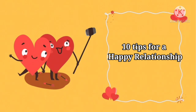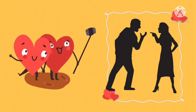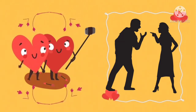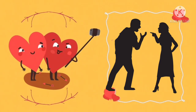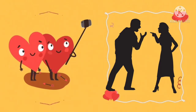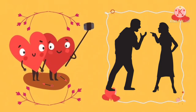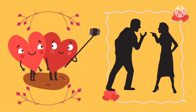Ten tips for a happy relationship. First, talk constructively — how you say things is as important as what you are saying. If you and your partner are having a disagreement, don't just attack them or go all out criticizing. Try using 'I' statements — by saying 'I feel' rather than 'you always,' you take responsibility for your emotions and your partner won't feel blamed for everything.